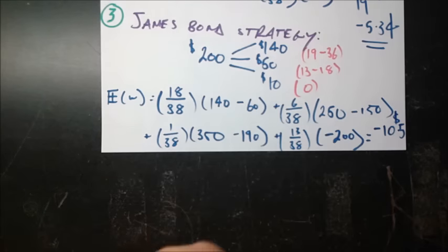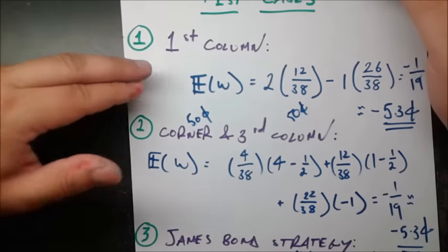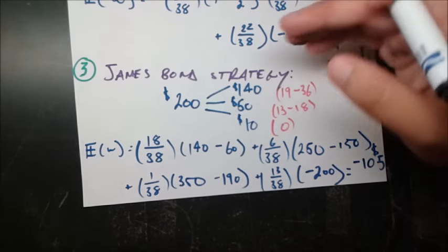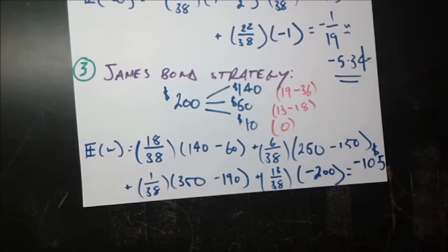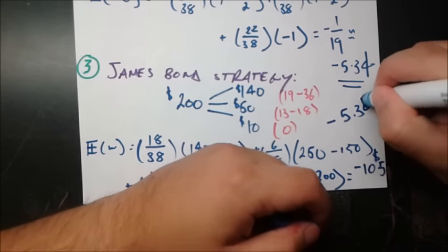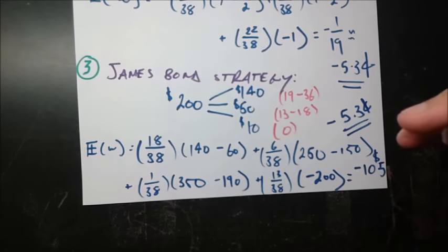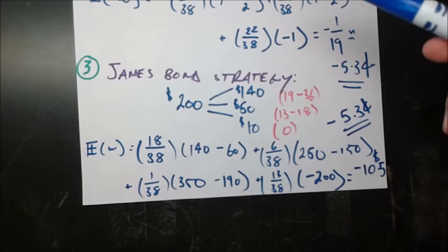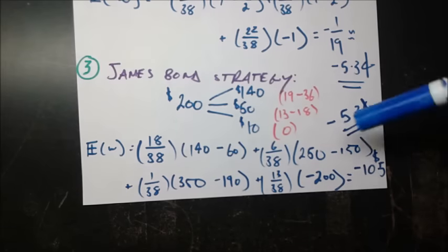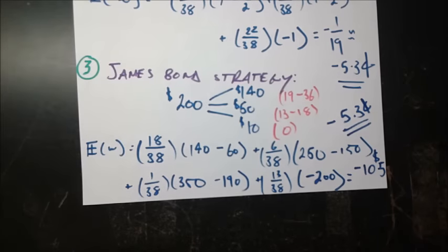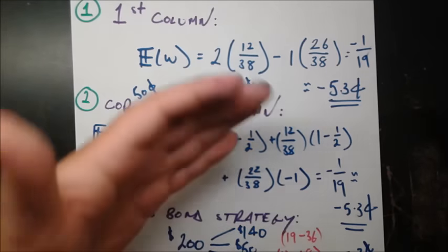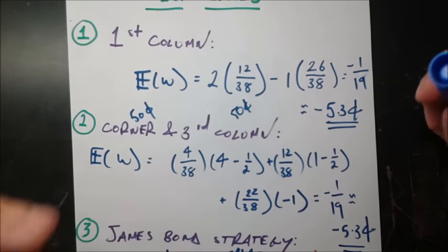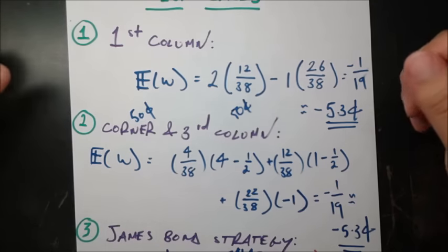We're not getting negative 5.3 cents here, but that's only because we bet so much more. In the first two strategies we bet $1 total; here we're betting $200. So if we find the amount of winnings per dollar — dividing negative $10.50 by 200 — we end up with negative 5.3 cents. That means even using this more complicated James Bond strategy, on average every round we play it, we're going to be losing 5.3 cents. You can prove that playing roulette, every single time you play it, you cannot do better than losing negative 5.3 cents on average per round. That's just the way the casino made it so that the house has the advantage at all times.